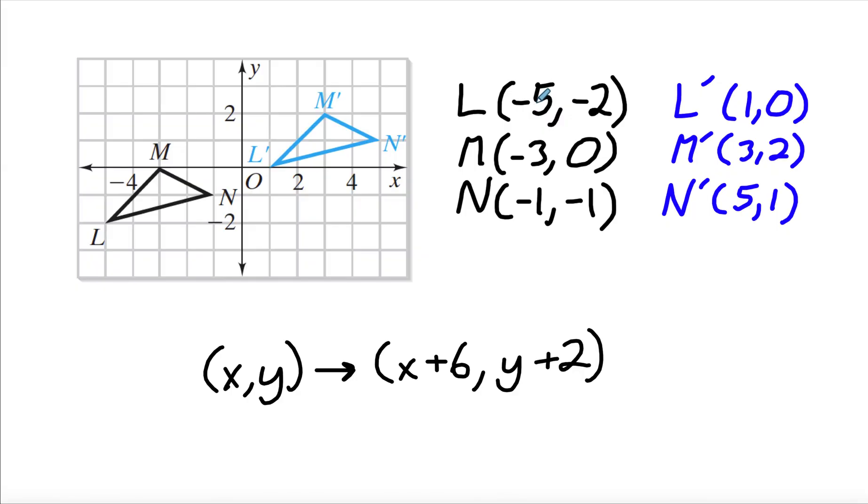We can double check that. Negative five plus six is one. Negative three plus six is three. And negative one plus six is five. And then negative two plus two is zero. Zero plus two is two. And negative one plus two is one. So that is correct.